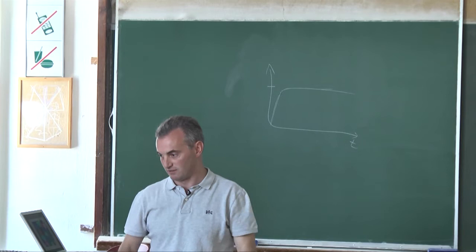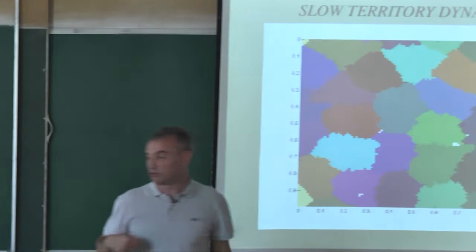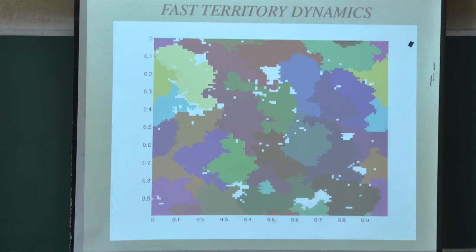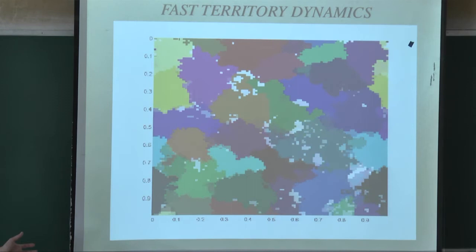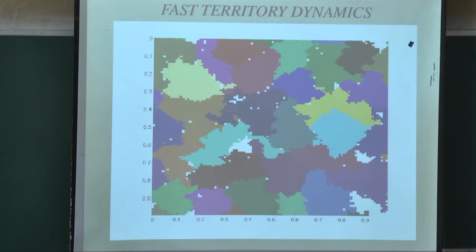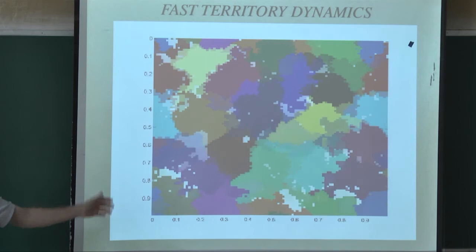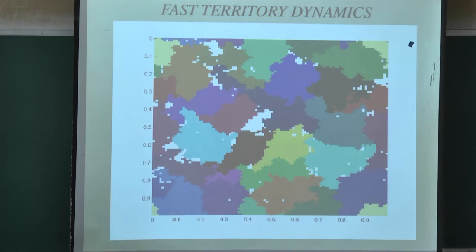The other movie, with reduced active scent time by half, shows very different behavior — lots of white space. This is probably not really biological but it shows the model can provide this kind of dynamics. You can tune the active scent time and see things change. There are lots of white spaces even inside territories because the animals don't have enough time to re-scent wherever they've been.